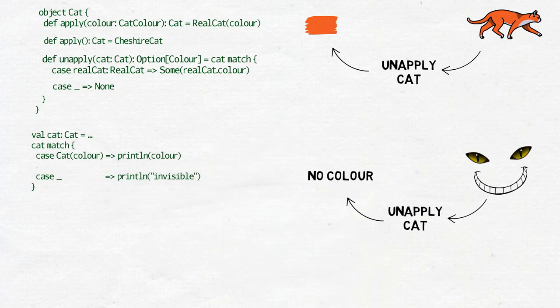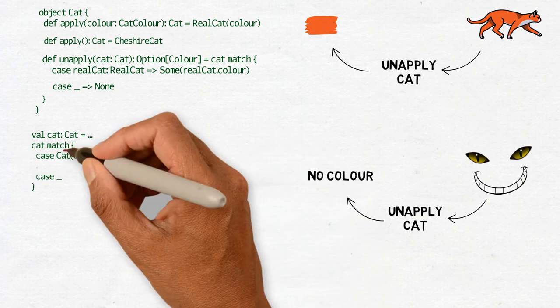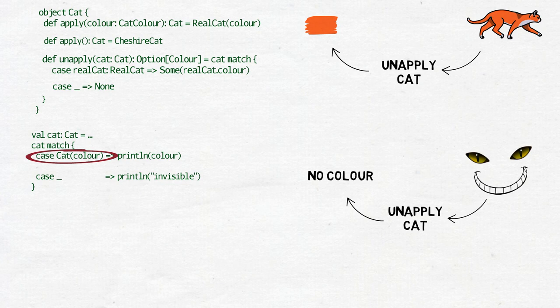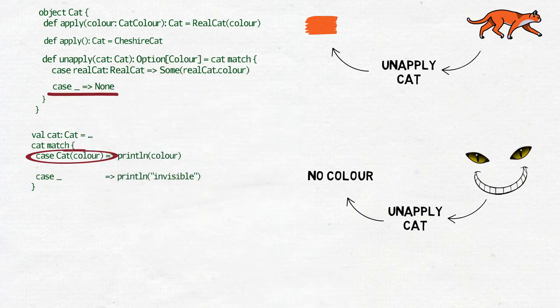Now, if our cat is for example a ginger cat, we will be able to extract this color with our shiny new unapply method and print it out. But for cats without colors, we cannot do that. The unapply method has to return none for them. And when we use match case on the cat, we will be forced to use the default case.